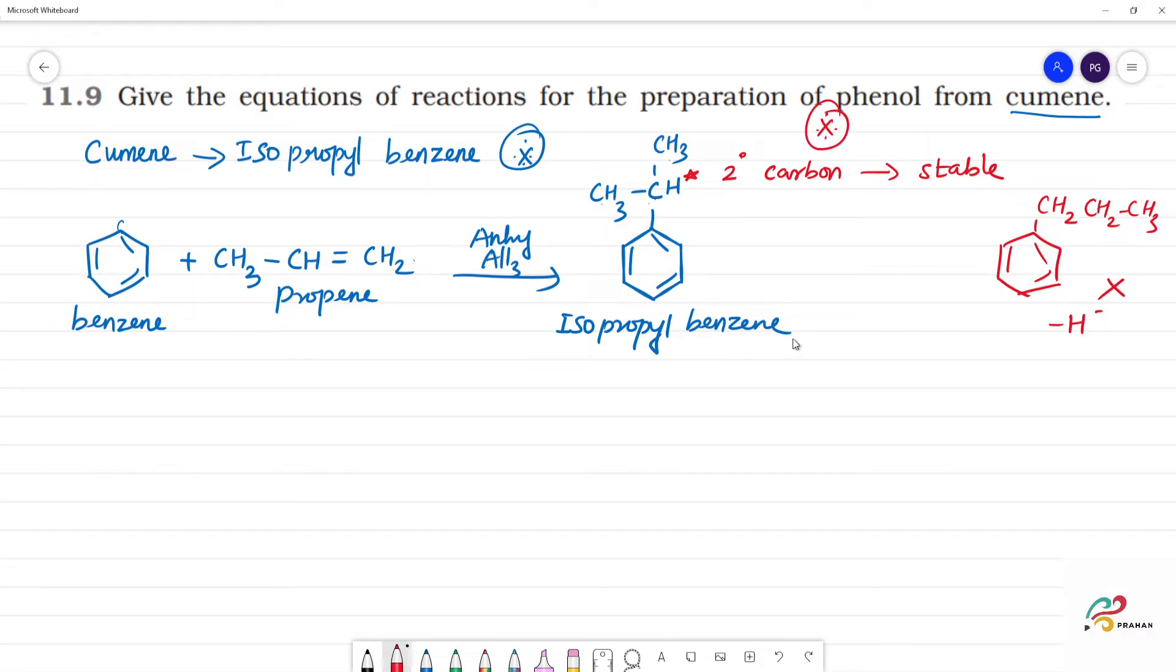So this is isopropylbenzene, and this is cumene. Now in cumene, we will do the reaction. Cumene is CH3-CH-CH3 on benzene. Now we will oxidize.